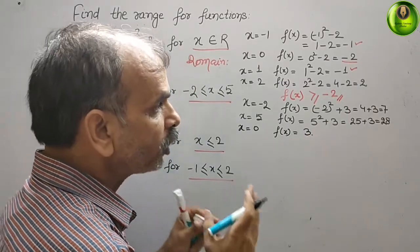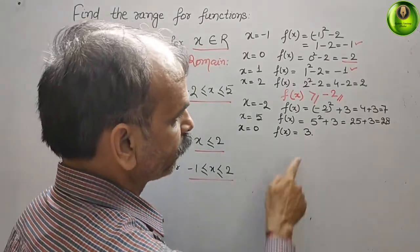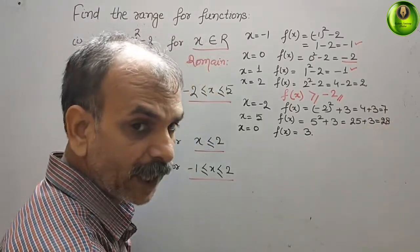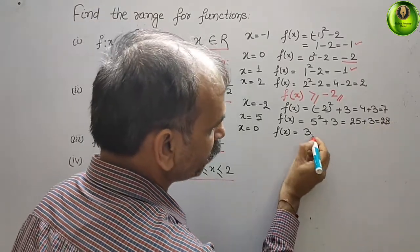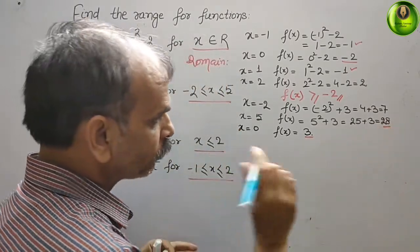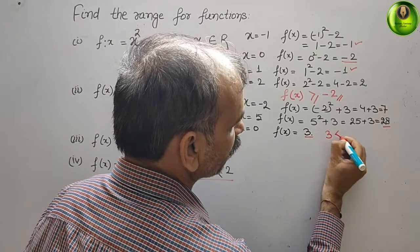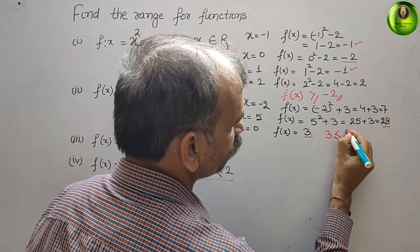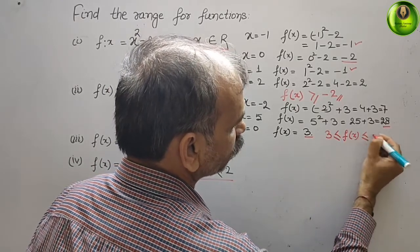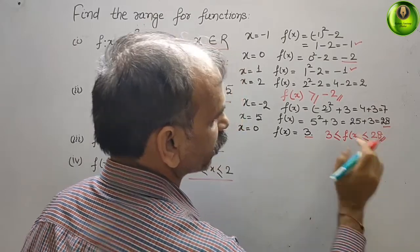Now what is your range? You can see the values are 3, 7, and 28. Therefore 3 is the minimum and 28 is the maximum. So the range is 3 ≤ f(x) ≤ 28.